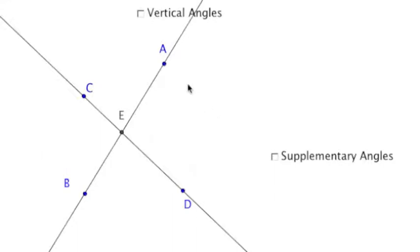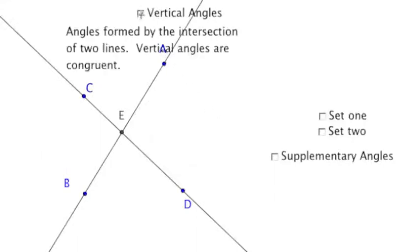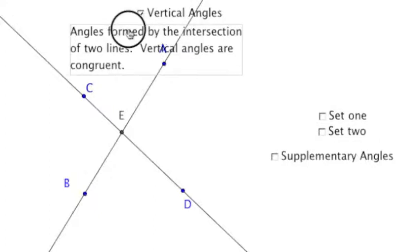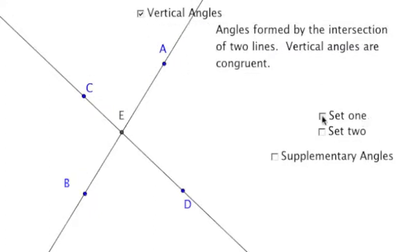When two lines intersect each other, you get two types of angles. One type of angles that are formed are vertical angles, and vertical angles are going to be congruent.